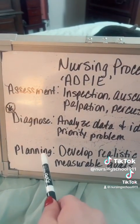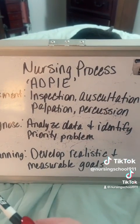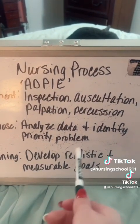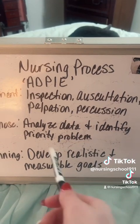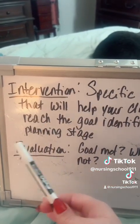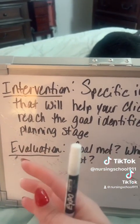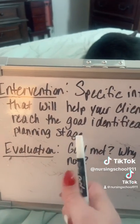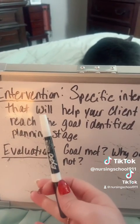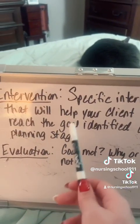Next is the planning stage. This is where we develop goals — most of the time your clinical instructor will have you develop a short-term and a long-term goal — and the key words are that the goals are realistic and measurable. Now that we have our assessment data and have identified a priority problem, we determine what specific interventions we need to help our patient reach the goal identified during planning.